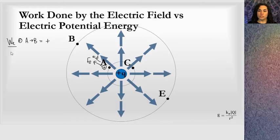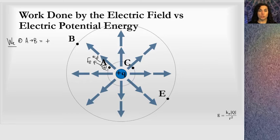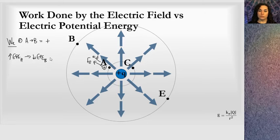I could also ask: what's the change in electric potential energy? Did this positive charge gain or lose electric potential energy? When it's at point A, close to the positive charge, the electric field has a high potential to do work on it — the charge definitely does not want to be next to the other positive charge. So at point A it has high electric potential energy, and at point B it has lower electric potential energy. The change in electric potential energy from A to B is negative.